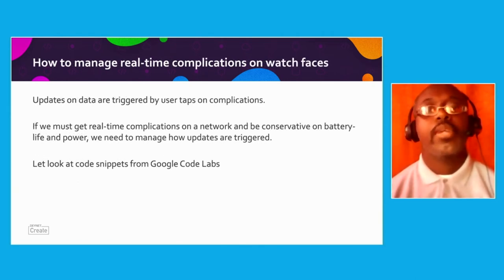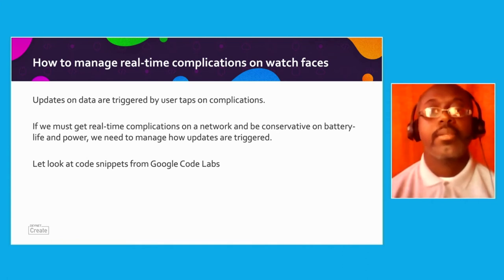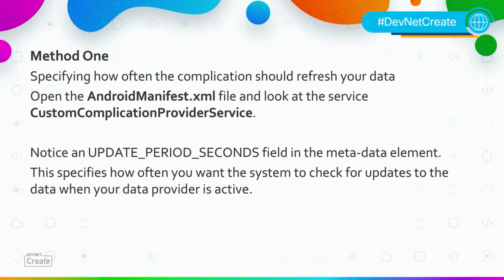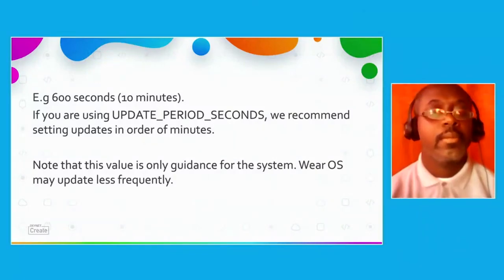Updates on data are triggered by user taps on complications on a watch. If we must get real-time complications on a network and be conservative on battery life and power, we need to manage how updates are triggered. Let's look at code snippets from Google Code Labs. Method 1: specify how often complications should refresh your data. Open the Android manifest file and look at the service custom complication provider service. You will notice an update period seconds field in the metadata element — specify how often you want the system to check for updates when your data provider is active. It is recommended you express the updates in minutes rather than seconds, as shown here.